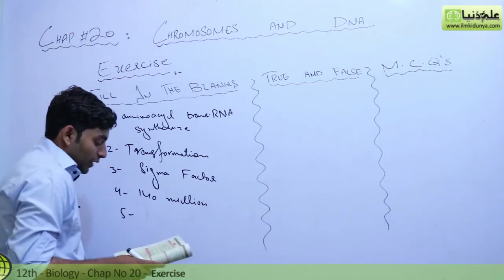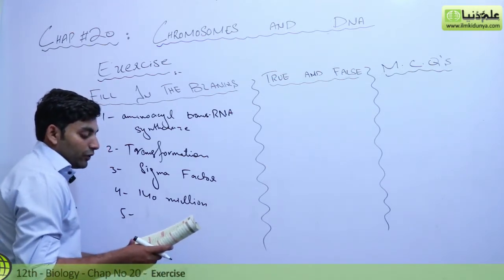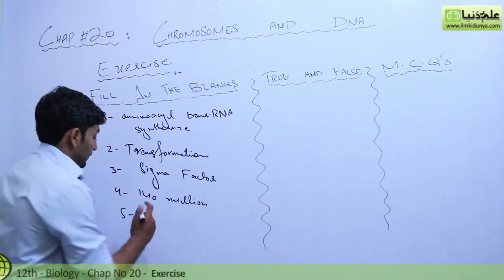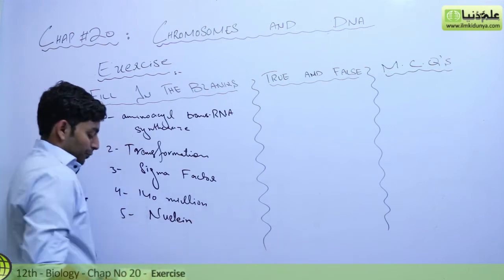Fifth one: Miescher extracted a white substance from the nuclei of human cells and fish sperm and called this substance nuclein.